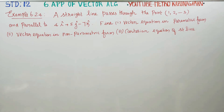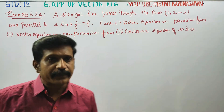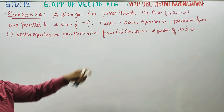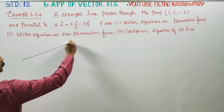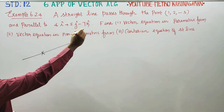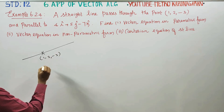Dear 12th standard students, I am Metro Karanagaran. In example 6.24, you have to find the vector equation in parametric form, vector equation in non-parametric form, and the Cartesian equation of the straight line. One straight line passes through one point which is (1, 2, -3).